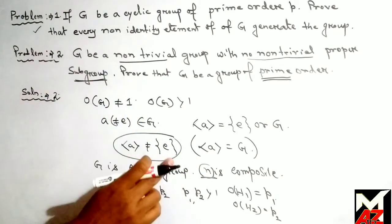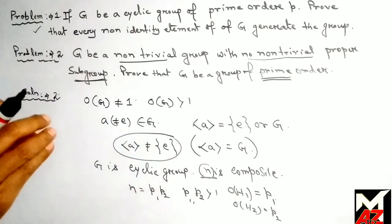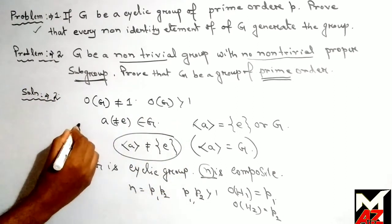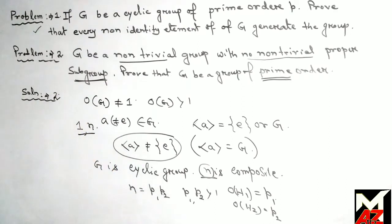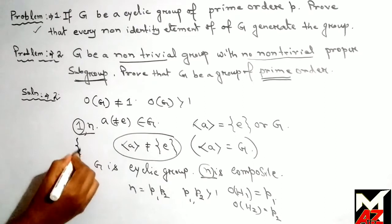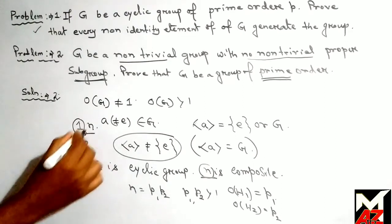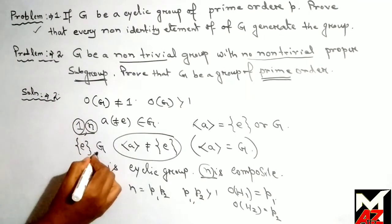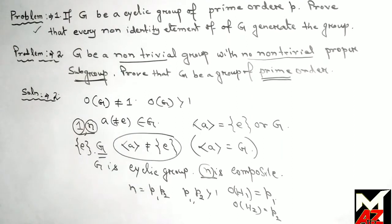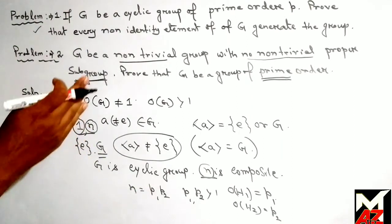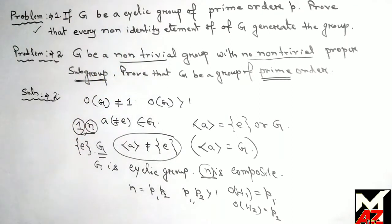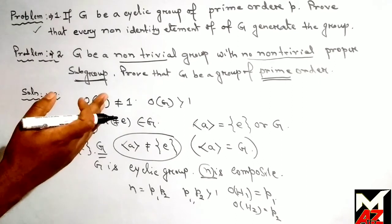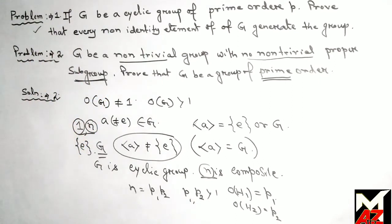So n must be prime, and it has only two divisors: one and n. For the divisor 1 it has the trivial subgroup, and for n it has the improper subgroup G. So we have proved that the group G is of prime order because n is prime. This is the solution of the second problem.